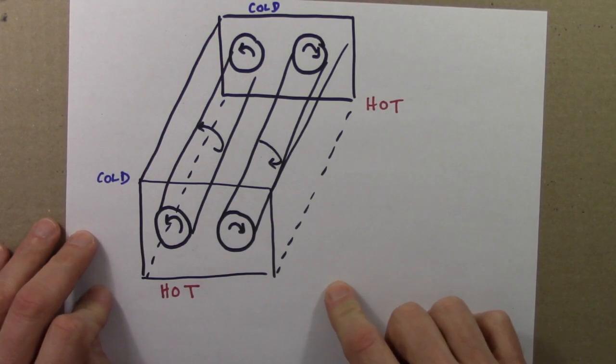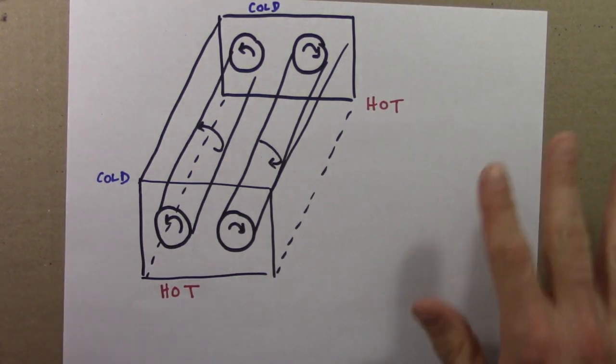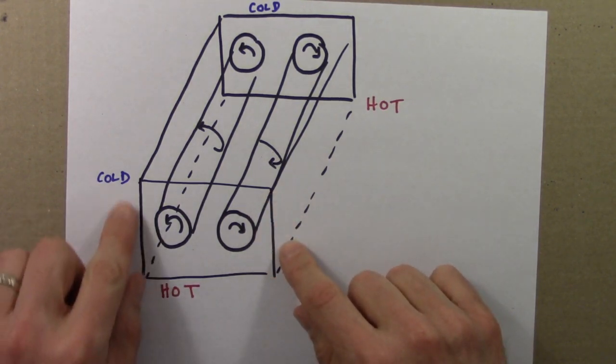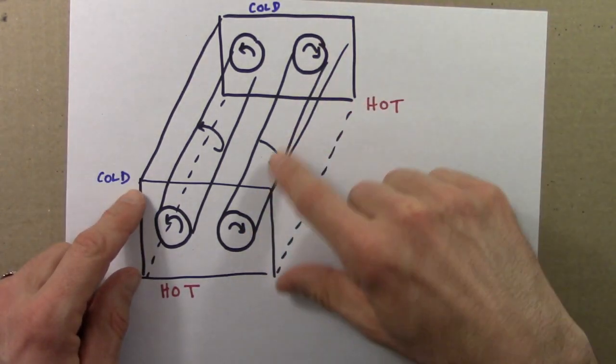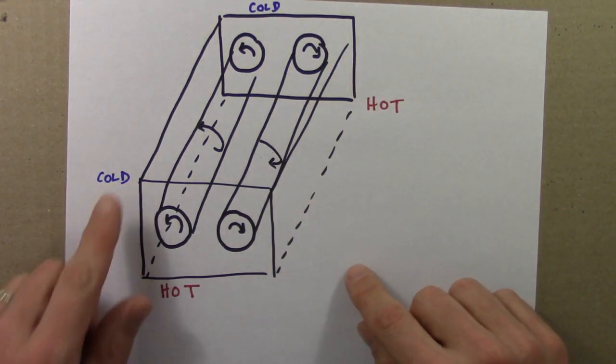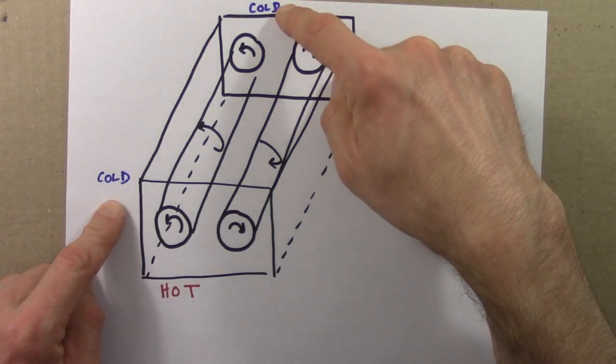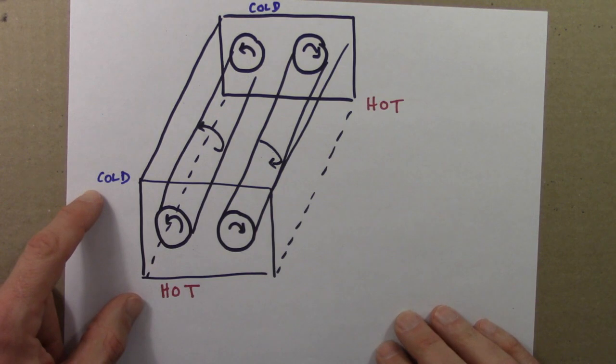Here's a sketch of this convection roll scenario I was describing earlier by waving my hands around. This sketch may or may not be helpful, it's not a great sketch, but let's see what we can get out of it. So here's the box, and the box is filled with some sort of a fluid. The bottom of the box is hot, and the top of the box is cold. So there are different temperatures, and the temperature difference is what we would measure for the parameter.